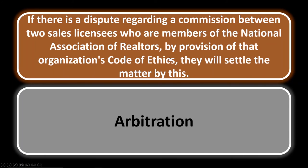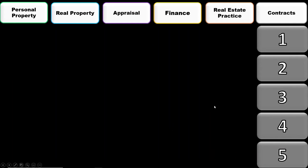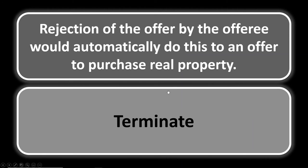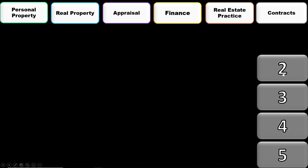Contracts number one: rejection of the offer by the offeree would automatically do what to an offer to purchase real property? The offeror submits the offer or counteroffer, and the offeree is the one receiving it. If the offeree rejects it, the offer is automatically terminated. Once terminated, you cannot go back and accept it or try to reinstate it.